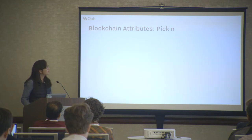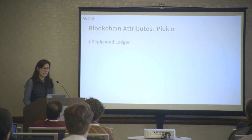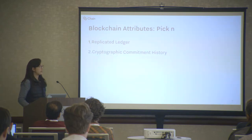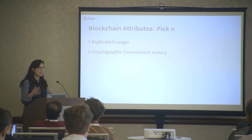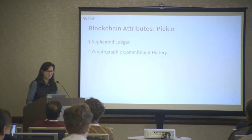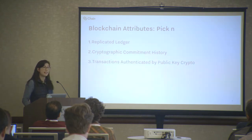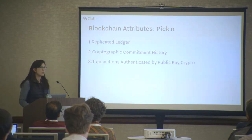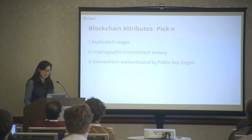And if I had to take a stab at what those attributes are, I'd suggest the following six things. First, a replicated ledger — does this system use an append-only log, and is that log replicated across multiple servers? The second attribute is a cryptographic commitment history, used to protect the integrity of that ledger's history. This is of course what's happening when blocks include the hash of the previous blocks. Third, transactions that are authenticated by public key crypto. When I send you money, do I have to authenticate myself by signing something with my private key? This idea is pretty central to Bitcoin and most other blockchain implementations.